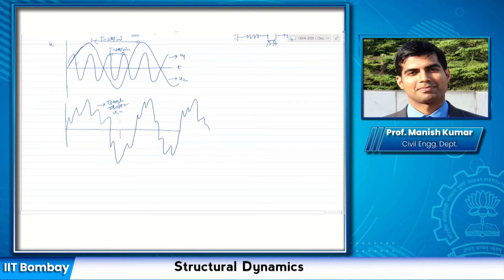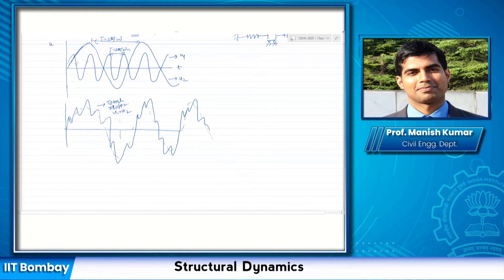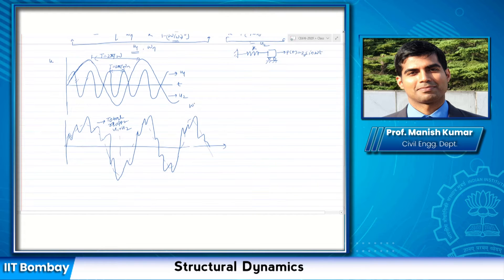The total response, which is u1 plus u2, depends on the frequency omega and omega_n. There are two frequencies here: the forcing frequency and the natural frequency. The resulting response is the sum of the response of both, and which frequency dominates depends on the frequency ratio omega by omega_n.